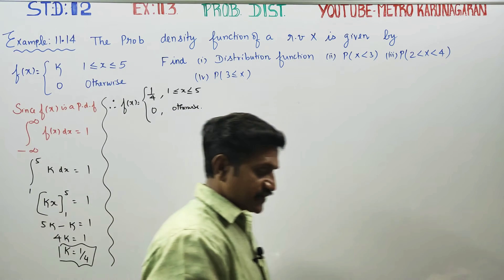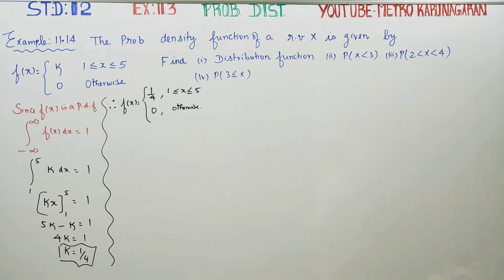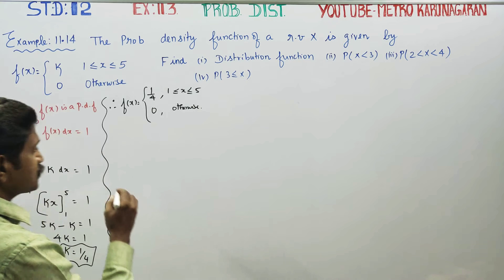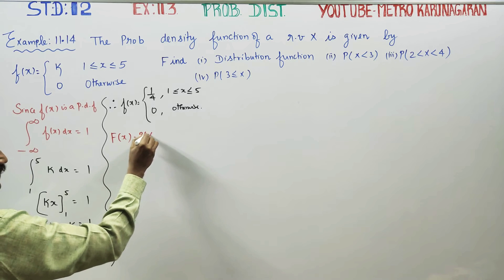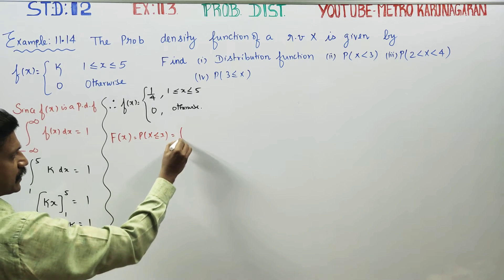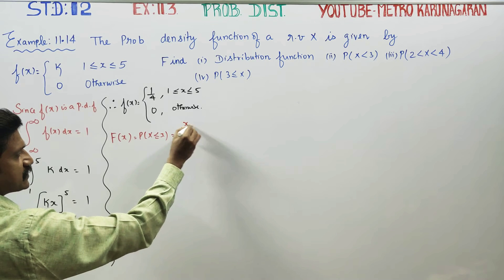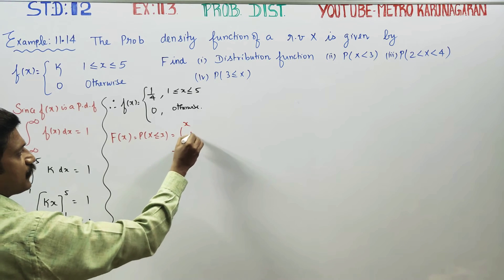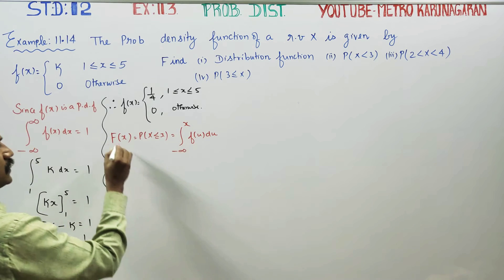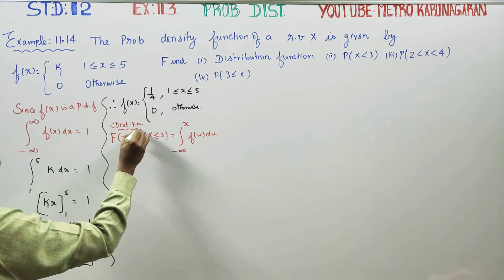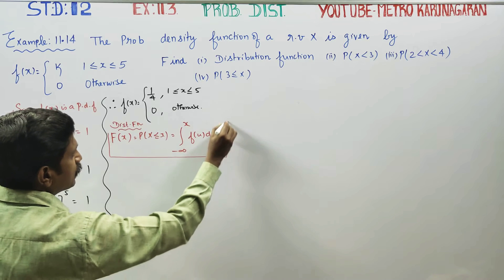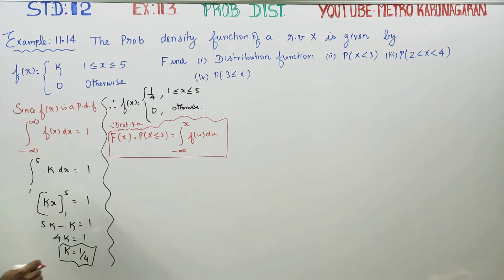The first question is: how to find the distribution function. The distribution function is given by capital F of x, or probability of X less than or equal to x. The formula is: F(x) = integration from minus infinity to x of f of u du. Remember this formula for future use.